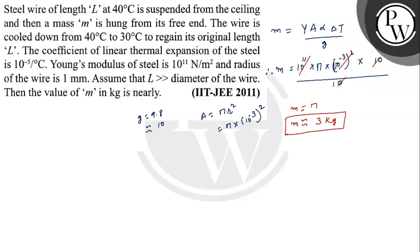This is the solution to this question. All the values are given: coefficient of linear thermal expansion, temperature, Young's modulus, radius. So we put the values in m equals Y·A·α·ΔT by g, and we got that m equals 3 kg is the required answer.